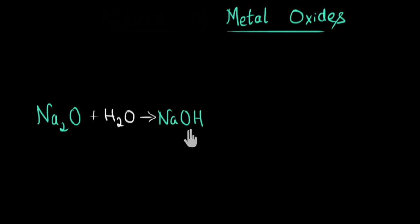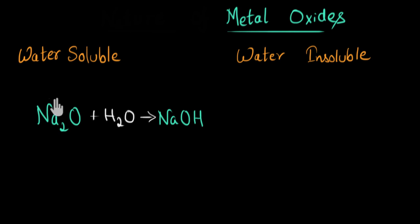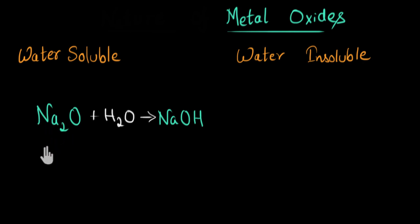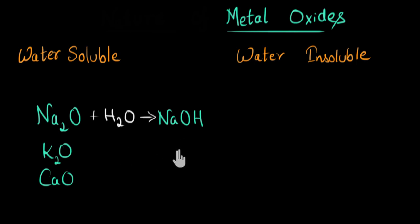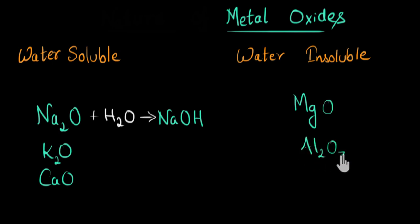There are some metal oxides which are soluble in water, and there are some that are insoluble in water. For example, if you take sugar and mix it in water, it completely dissolves. Something similar happens with certain metal oxides such as sodium oxide, potassium oxide K₂O, or calcium oxide CaO — these are water soluble and will mix in water to form hydroxides. Whereas certain other metal oxides are insoluble in water, for example magnesium oxide or aluminum oxide Al₂O₃. Magnesium oxide does dissolve to a very small, almost negligible extent.